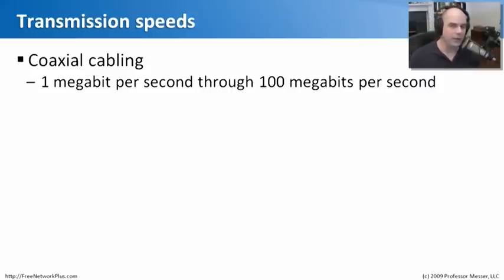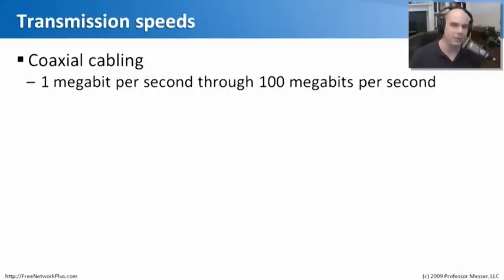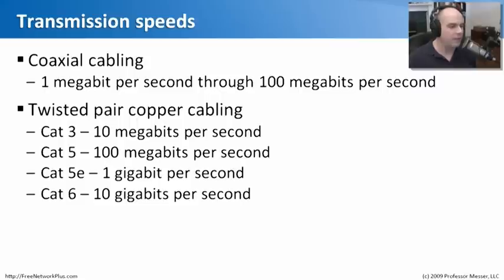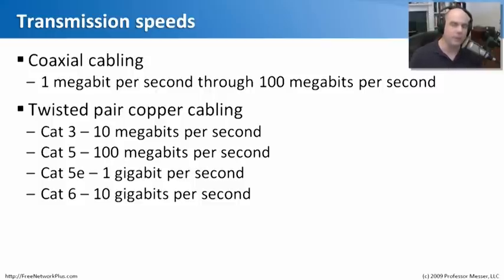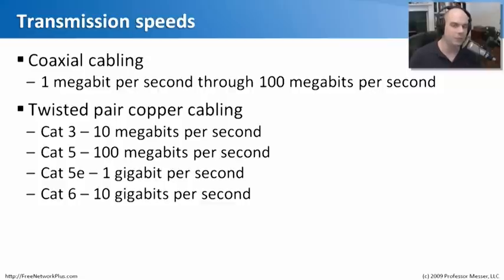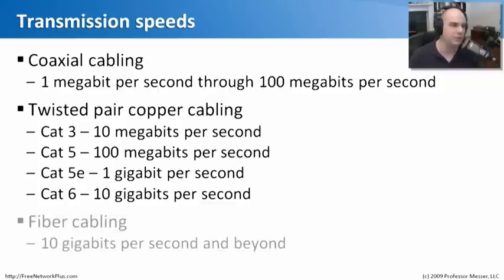For coaxial cabling, you'll generally find coax can send traffic anywhere from a megabit per second or less all the way up to about 100 megabits per second — that's a good generalization for coax. Most everybody today is sending traffic over twisted pair cabling. If you have a network in your house or workplace, it's probably using twisted pair. There are different categories of twisted pair, and I've summarized here for Cat 3, Cat 5, Cat 5e, and Cat 6 the maximum transmission speeds across those categories.